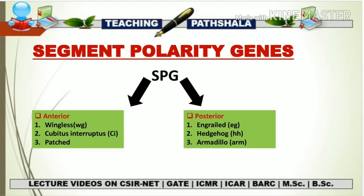The word 'segment polarity gene' itself defines that it is going to give rise to a polarity of a segment, but from our previous knowledge we know that parasegments are part of a segment because the segment has been further divided into parasegments. In the upcoming slide you will see that all these segment polarity genes are going to give rise to polarity to both the parasegment as well as the segments.